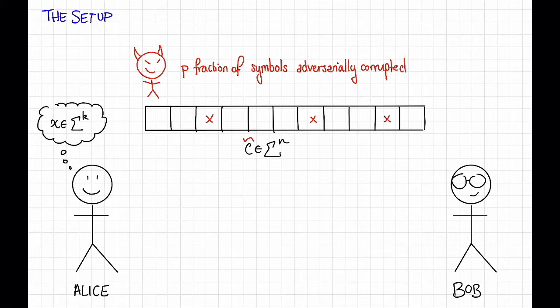The difference is that now, Bob does not actually want to recover all of Alice's message. Instead, Bob just wants to recover part of Alice's message, or perhaps part of the code word. In this example, maybe Bob only wants c7, the seventh symbol of the code word.